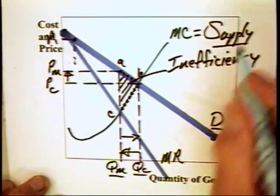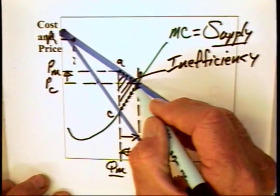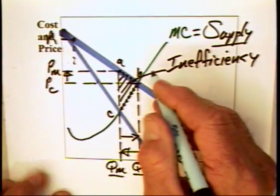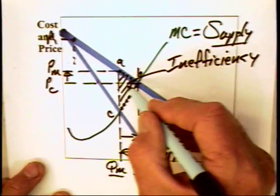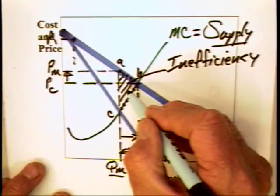It's also referred to as deadweight loss and it is also referred to as the Harberger triangle. This is what can be gained if, in fact, the monopolist were to expand production from QM to QC. It is all that can be gained on balance, too.